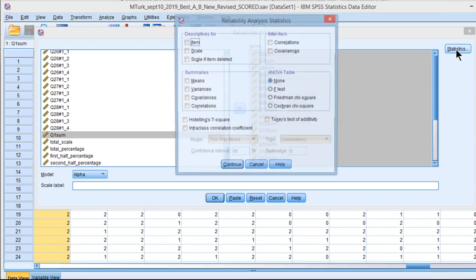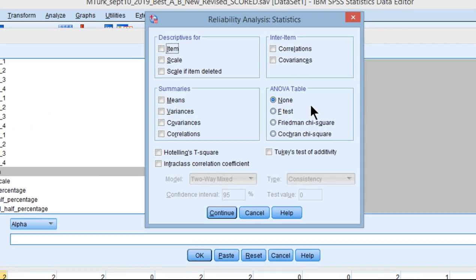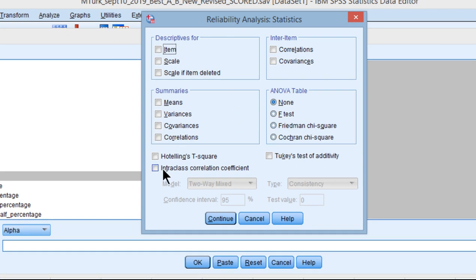So if you click on Statistics, you can see that you have several options here, one of which is the Intraclass Correlation Coefficient, and this is the key piece of information you need in order to estimate the confidence intervals, and you get the option of 95%.